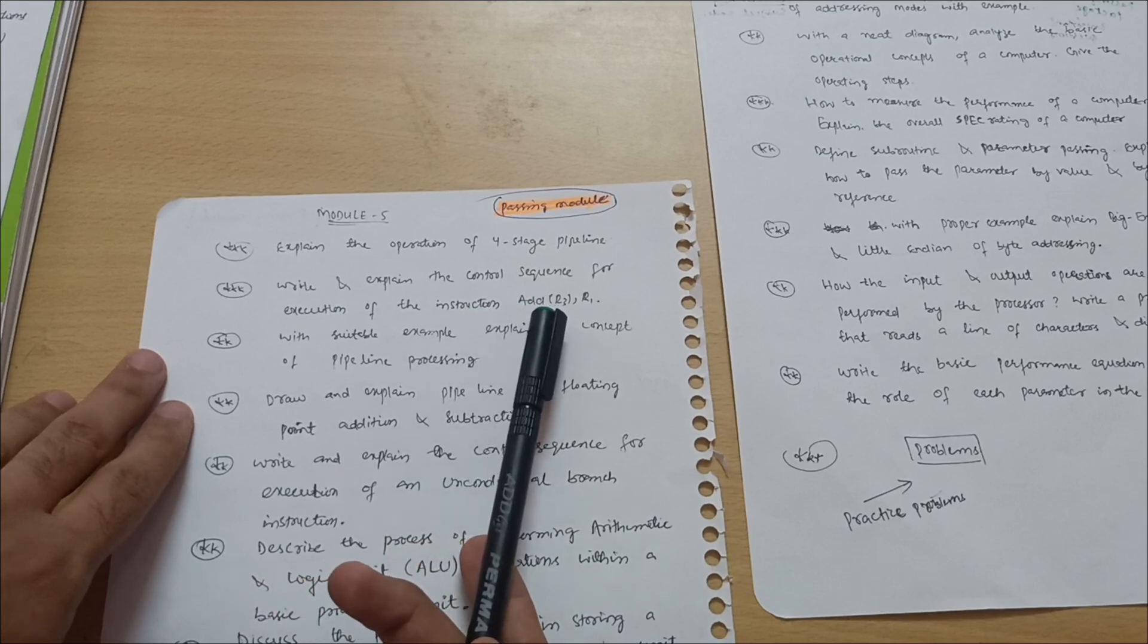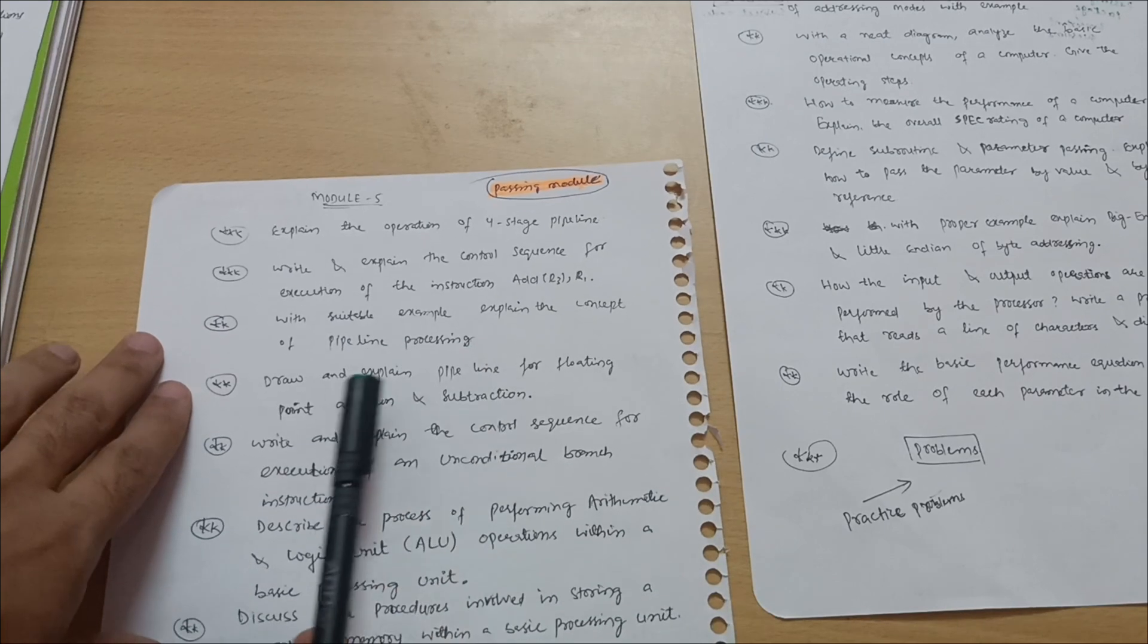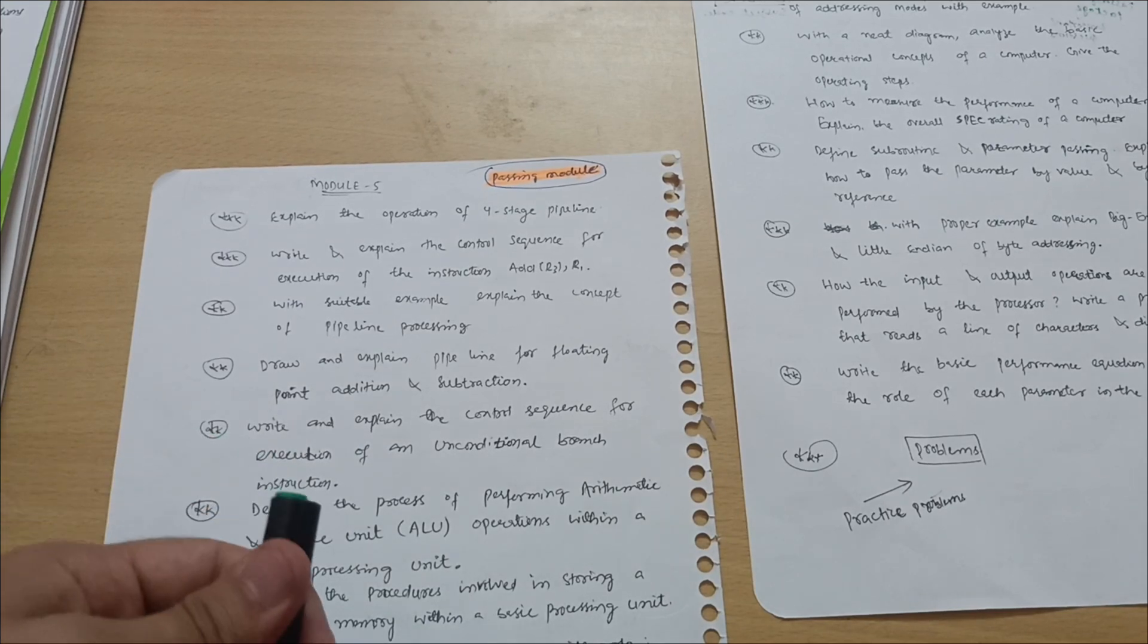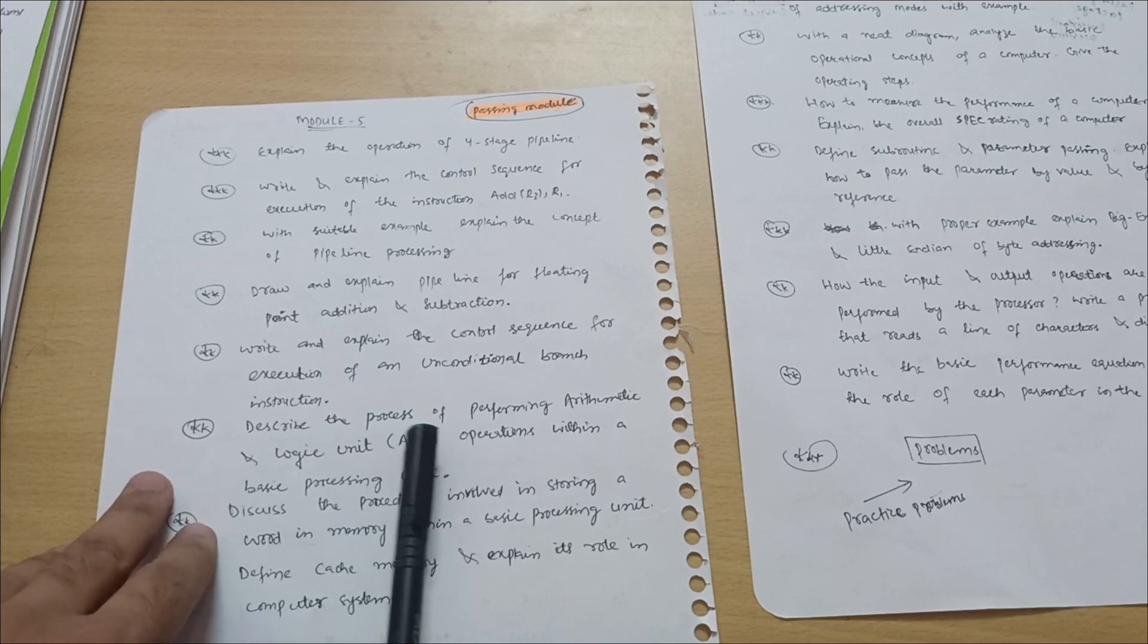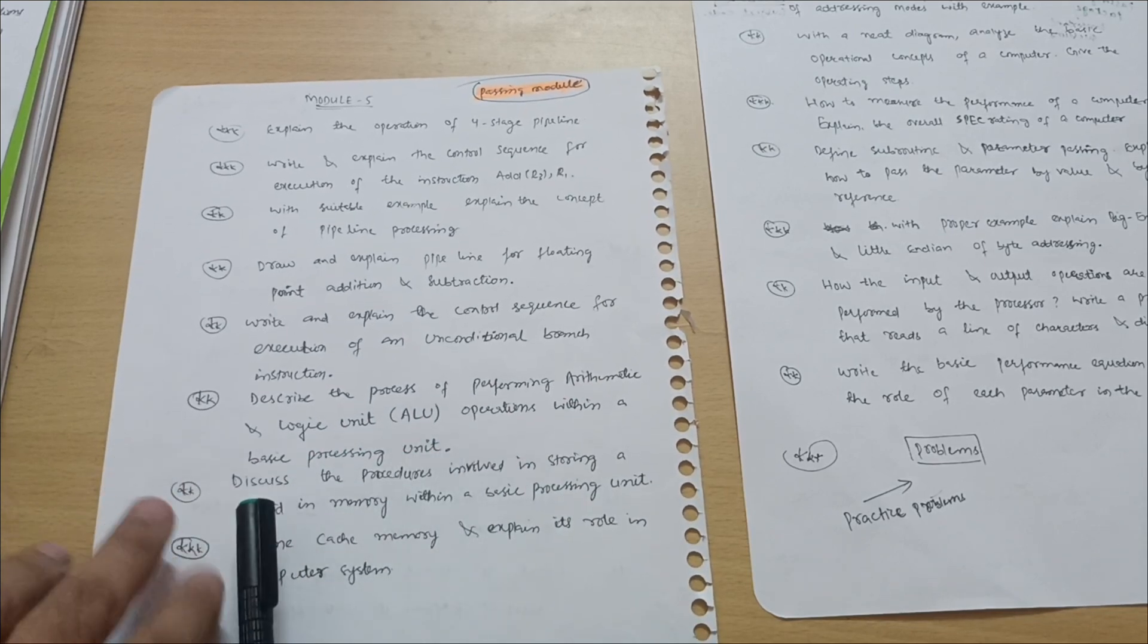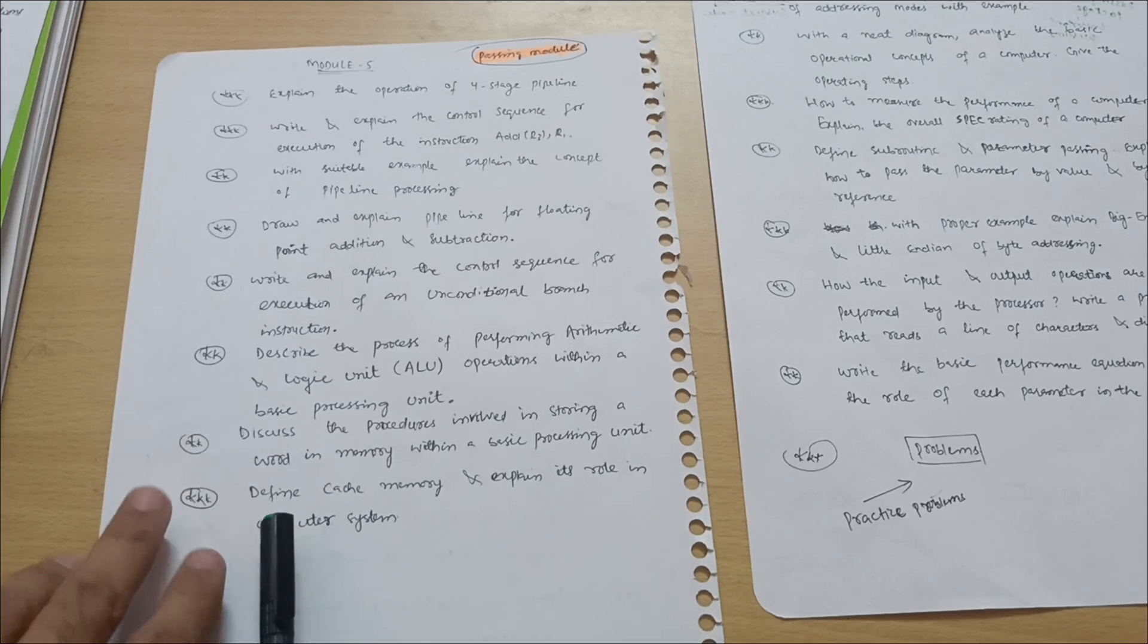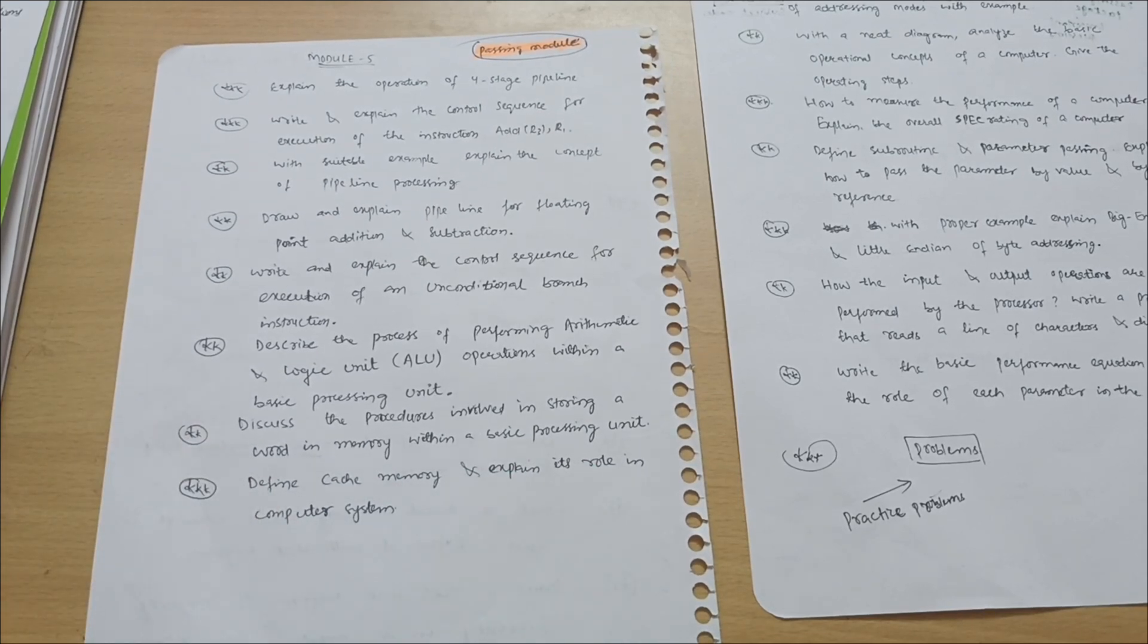Explain the operation of four stage pipeline - very important one. Write and explain the control sequence for execution of the instruction ADD R3, R1. With a suitable example explain the concept of pipeline processing. Draw and explain pipeline for floating point addition and subtraction. Write and explain the control sequence for execution of an unconditional branch instruction. Describe the process of performing arithmetic and logic unit ALU operations within a basic processing unit. Discuss the procedures involved in storing a word in memory with a basic processing unit. Define cache memory and explain its role in computer system. This is all about the module fifth.